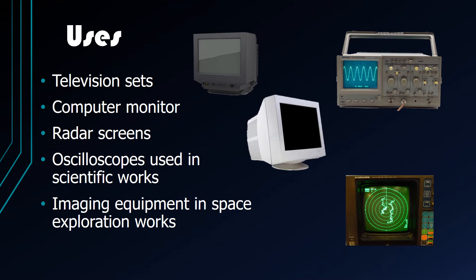Cathode ray tubes were widely used in TVs and computer monitors. In these color devices, an image is produced by controlling the intensity of each of three electron beams — one for each primary color: red, green, and blue — with a video signal as a reference.